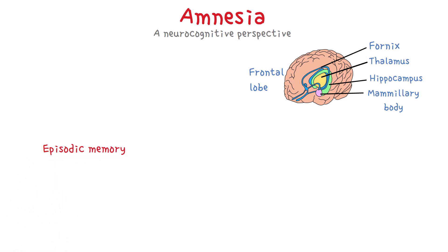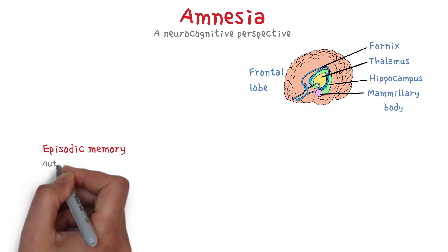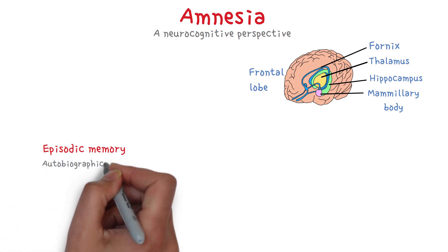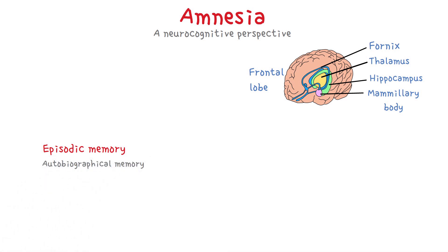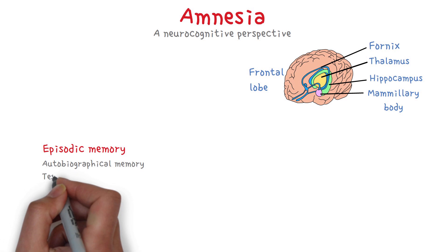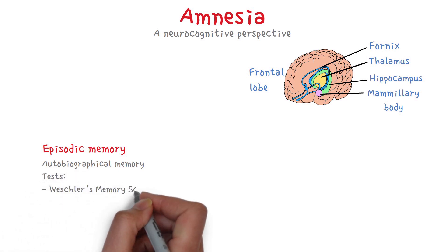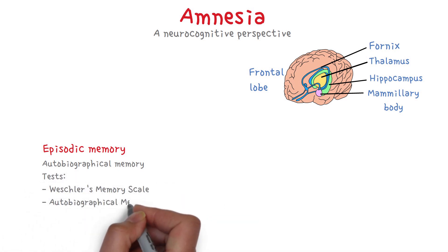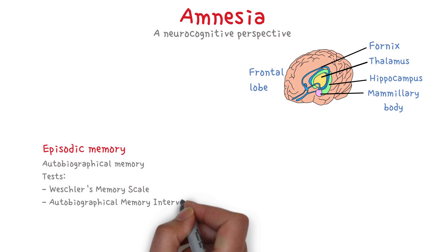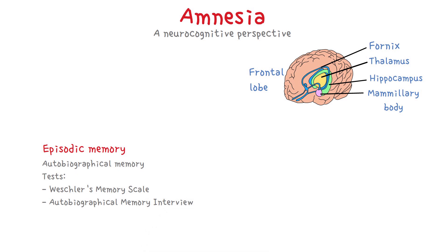The main type of memory that is affected by amnesia is episodic memory. Amnesiac patients are impaired on tests for events related to their own lives, so autobiographical memory. Tests such as the Autobiographical Memory Interview and other episodic memory scales are some of the tests that can be performed if amnesia is suspected.